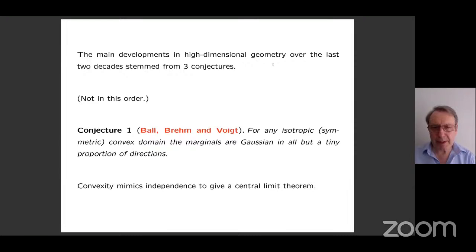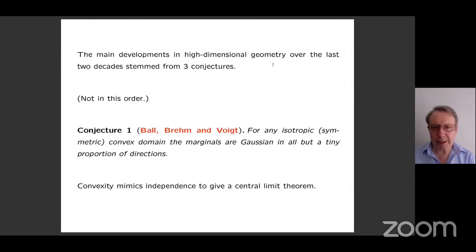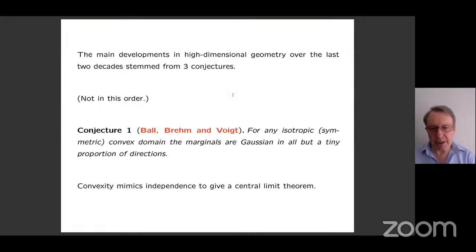The main developments in high-dimensional geometry over the last 20 to 30 years stemmed from three conjectures. I'll present these not in chronological order, but in the order in which they most obviously fit the viewpoint that indicator functions of convex domains look like densities of independent random variables — starting with the most obviously probabilistic statement and gradually moving to statements that look less obviously like probability.